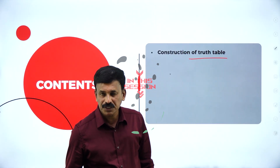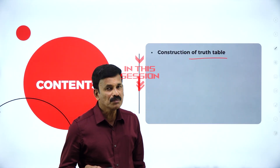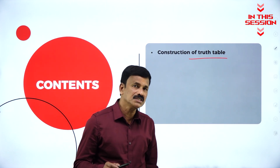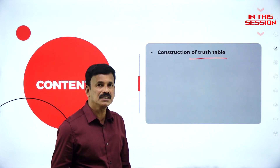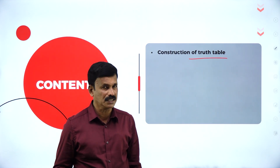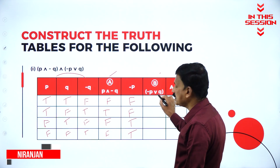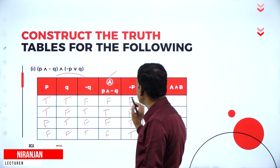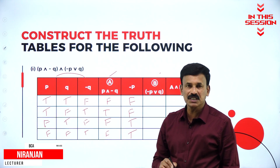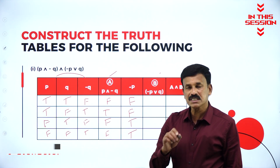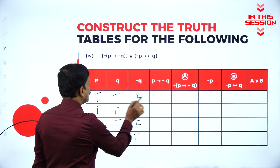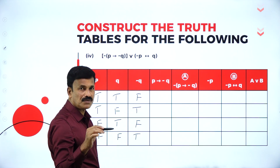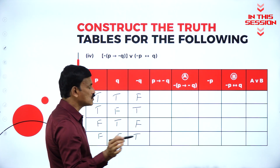For construction of a truth table, we must be familiar with the truth tables for conjunction, disjunction, conditional, biconditional, and negation. In case of disjunction, false and false is false; in all other cases it is true. For conditional, true and false is false; in other cases it is true.